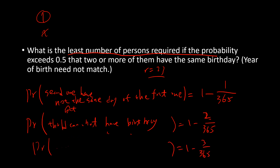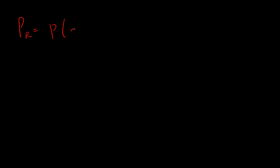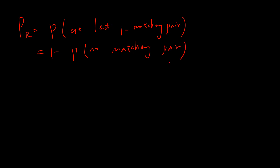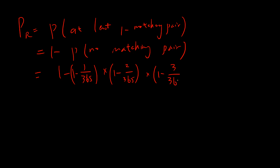We keep going. Let P(r) be the probability of at least one matching pair. That equals 1 minus the probability of no matching pair. No matching pair means no two persons share the same birthday. So the answer is 1 minus the product: the second person has no match with the first, the third has no match with the first two, the fourth has no match with the previous three, and so on.